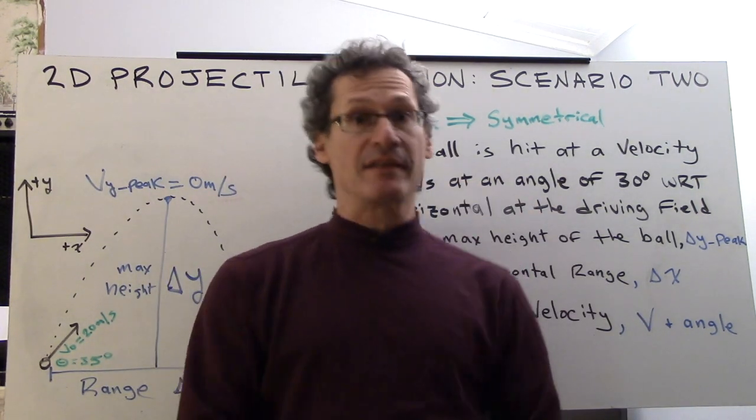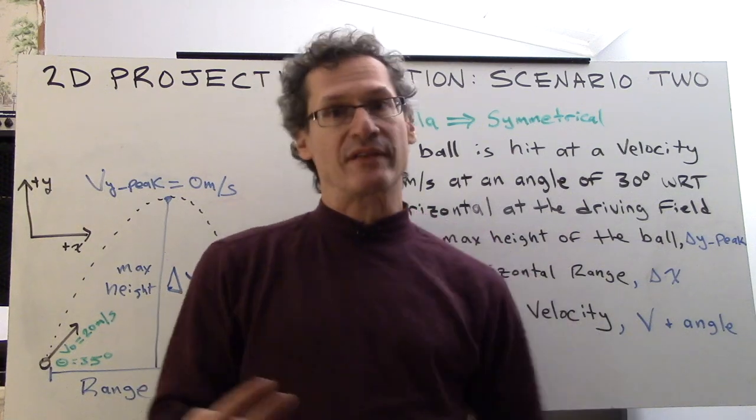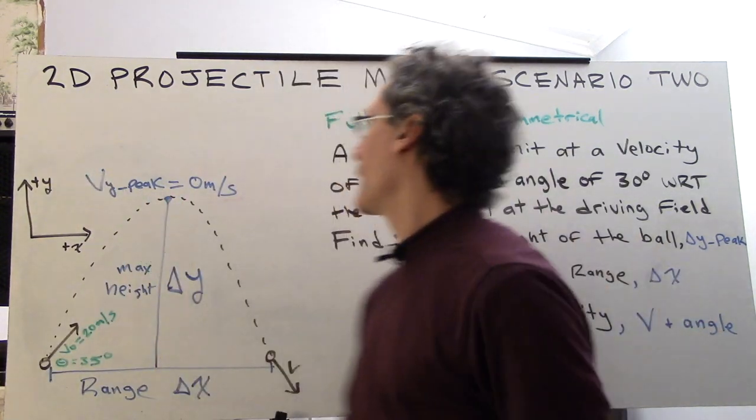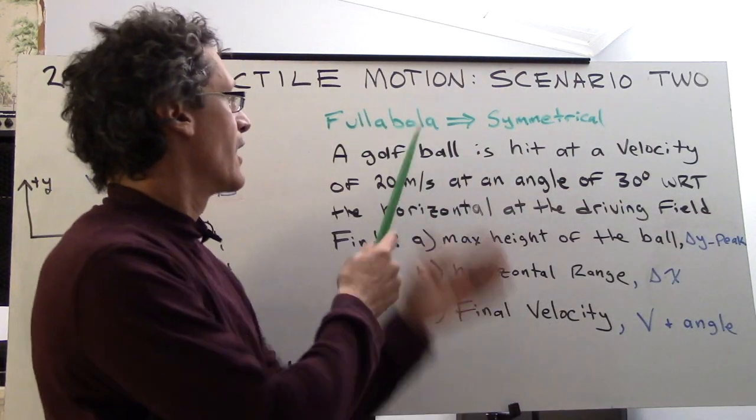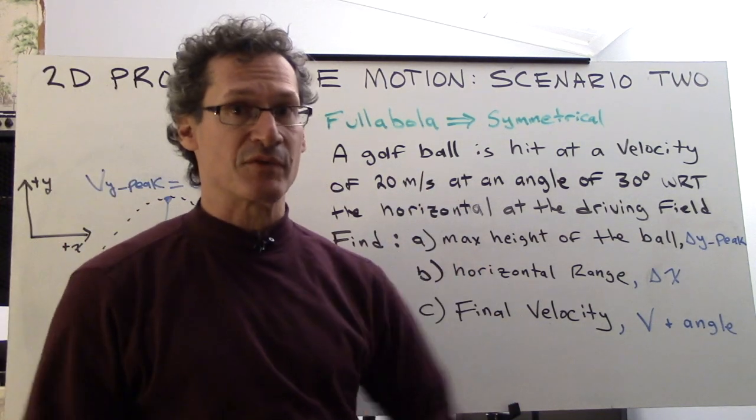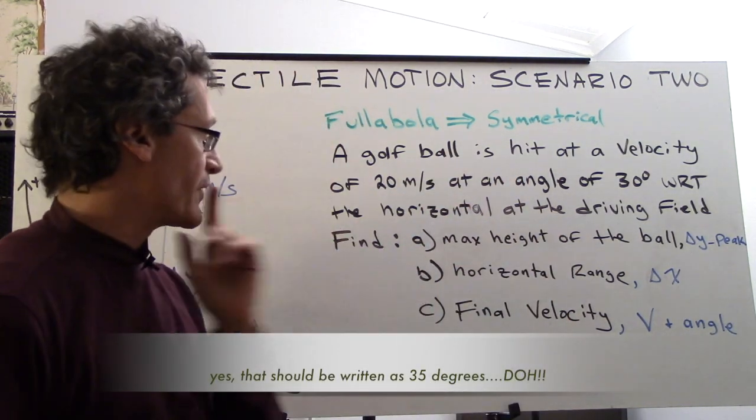Greetings, peeps, and here's the second case of 2D projectile motion, the parabola. Here's the situation: a golf ball is hit at a velocity of 20 meters per second at an angle of 35 degrees, so we want to know a few things.